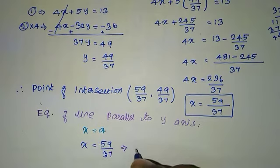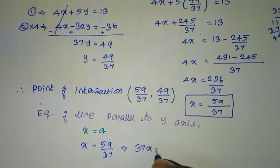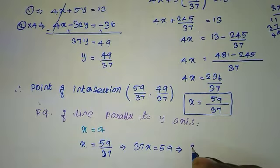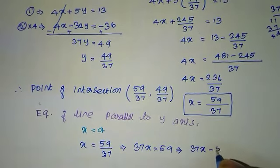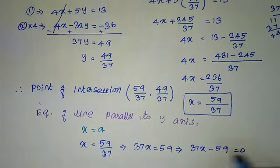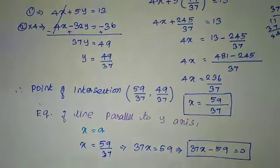So x equal to 59 by 37, which implies 37x equal to 59. That is 37x minus 59 equal to 0. This is the required equation of the line.